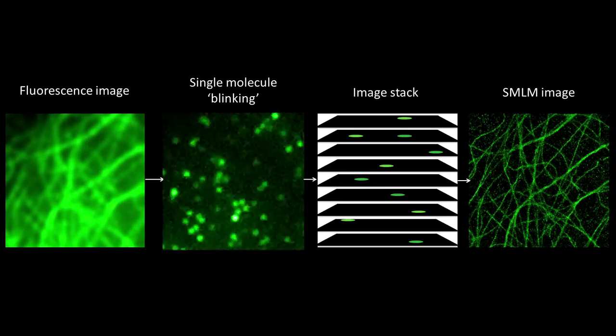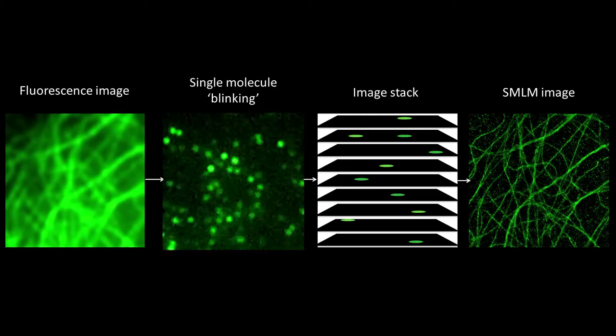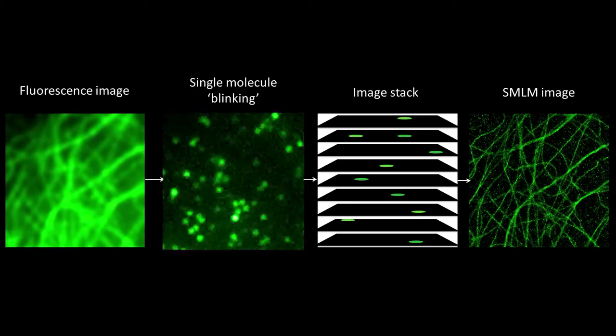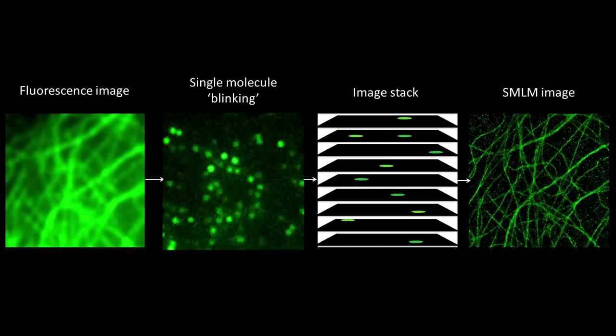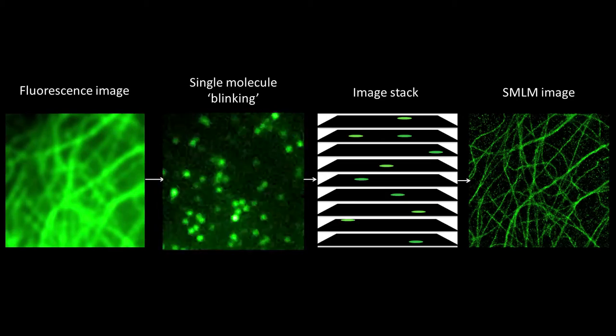Thousands of images are collected, each with a different subset of molecules in the emissive state. Each frame is then analysed with single molecule point spread functions fitted to localise the emitter's position to within a few nanometres. The coordinates of every emitter thus determined are then plotted to generate the final super-resolution image.